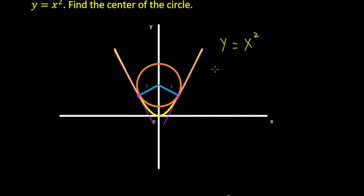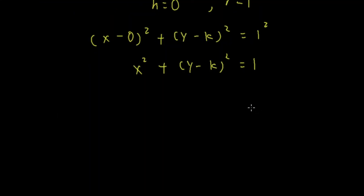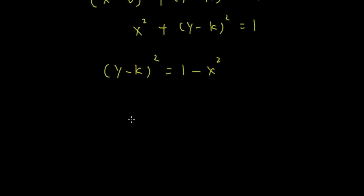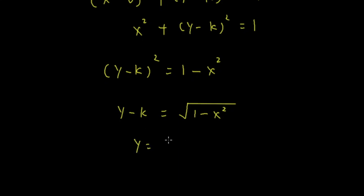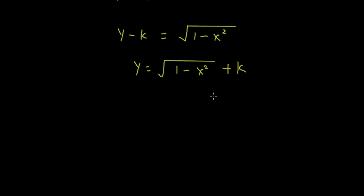The parabola is y = x². To compare derivatives, we isolate y in the circle equation. Subtracting x² from both sides gives (y − k)² = 1 − x², and taking the square root gives y − k = √(1 − x²), so y = √(1 − x²) + k. This is the circle curve expressed in terms of y.